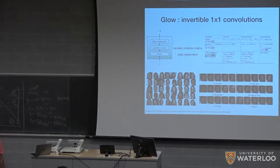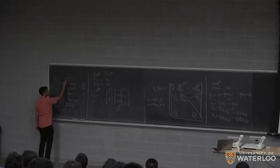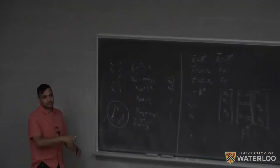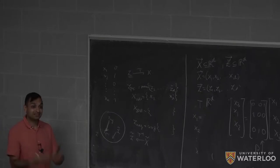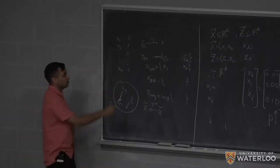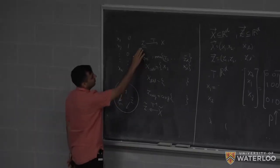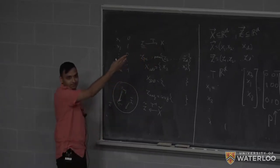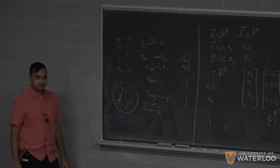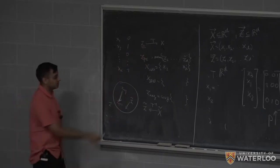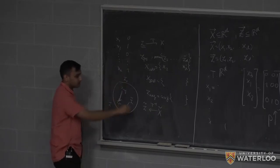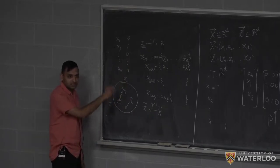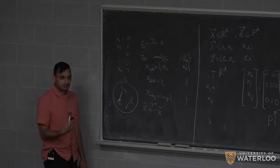The latent space z here refers to the source distribution we choose — the hidden representation that the transformation maps from. It captures properties of x. By moving in different directions in this latent space, you can manipulate attributes of the generated images.